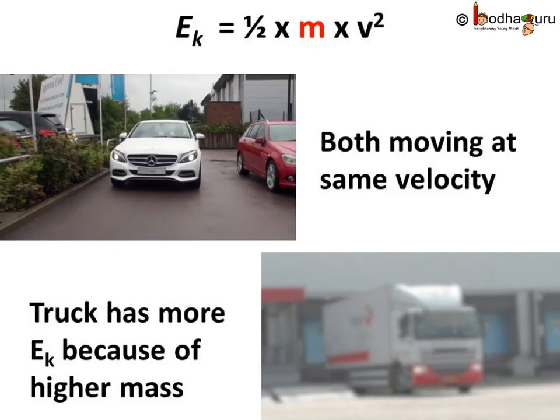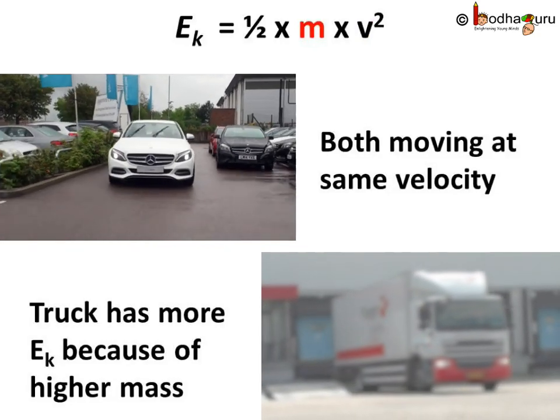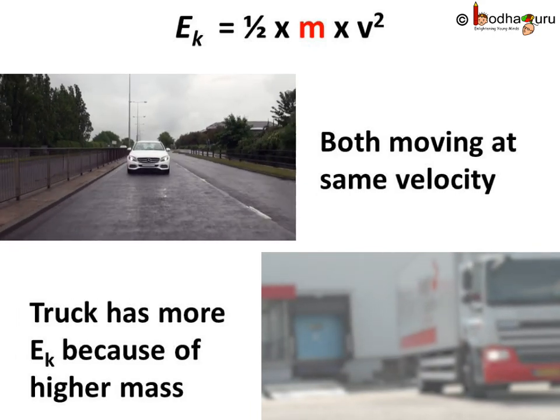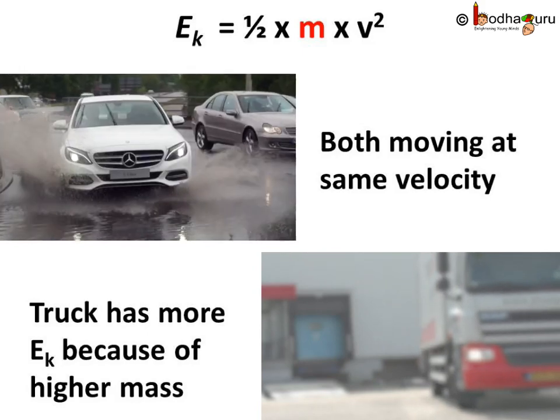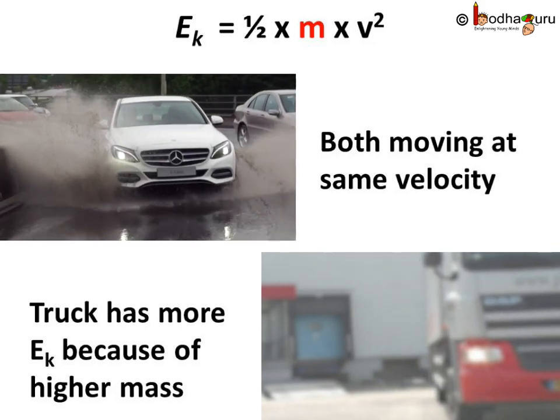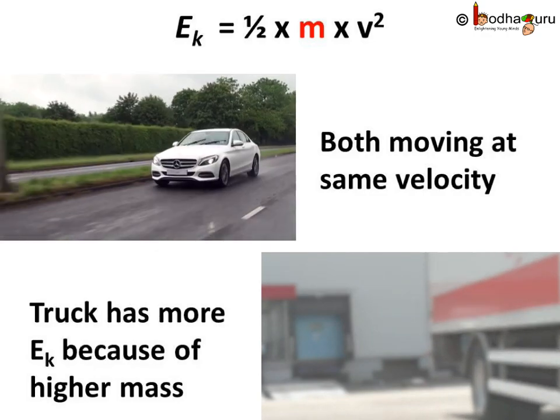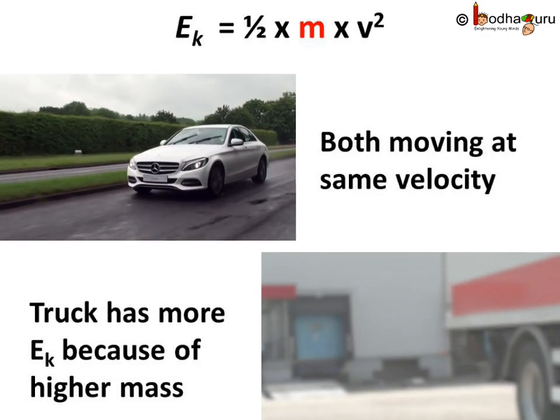The formula also has m, which means kinetic energy depends on mass. So if a car and a truck are moving with the same velocity, the truck would have more kinetic energy because of its higher mass.